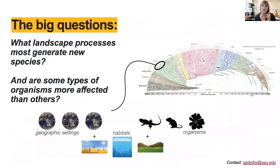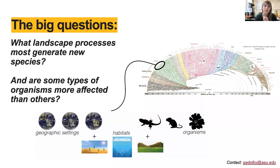As we keep studying different species, different habitats, and different geographical settings, we're trying to build an understanding for how different landscape processes shape the formation of new species, which processes are most important, and whether some types of organisms are more likely to be affected than others — and why. I'll leave it there and take some questions if there's time. My contact info is on that slide as well.